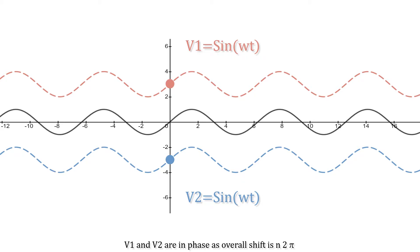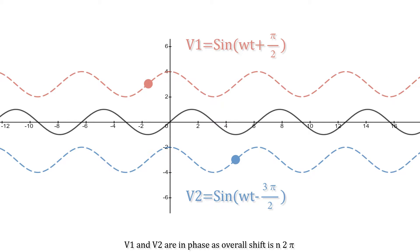Understanding phase: we've got two voltages with a reference voltage in the middle — V1 and V2. If the overall phase shift between them is a multiple of 2 pi, then they're said to be in phase; they're happening at the same time in the same direction. Here V1 has a phase lead — V1 is leading by pi over 2 radians, and V2 is lagging a normal sine wave by 1.5 pi radians. But the overall phase shift between the two is a multiple of 2 pi, so V1 and V2 are still in phase with each other.